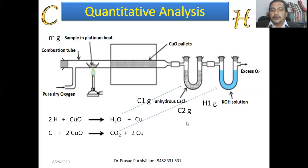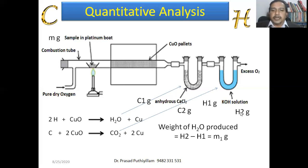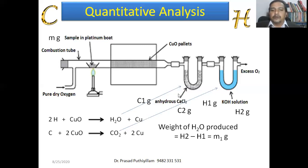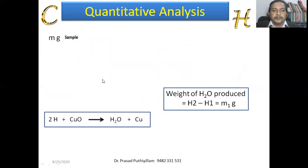Carbon dioxide cannot be absorbed by calcium chloride, but it can be absorbed by the potassium hydroxide solution. After absorption, the anhydrous calcium chloride — having absorbed the water — increases in weight; let this weight be C₂ grams. The KOH solution absorbs carbon dioxide and its weight increases to H₂ grams. Note: H₂ here is not hydrogen — it is the weight of the KOH solution after absorbing carbon dioxide. The weight of water produced by combustion is H₂ − H₁, taken as M₁.